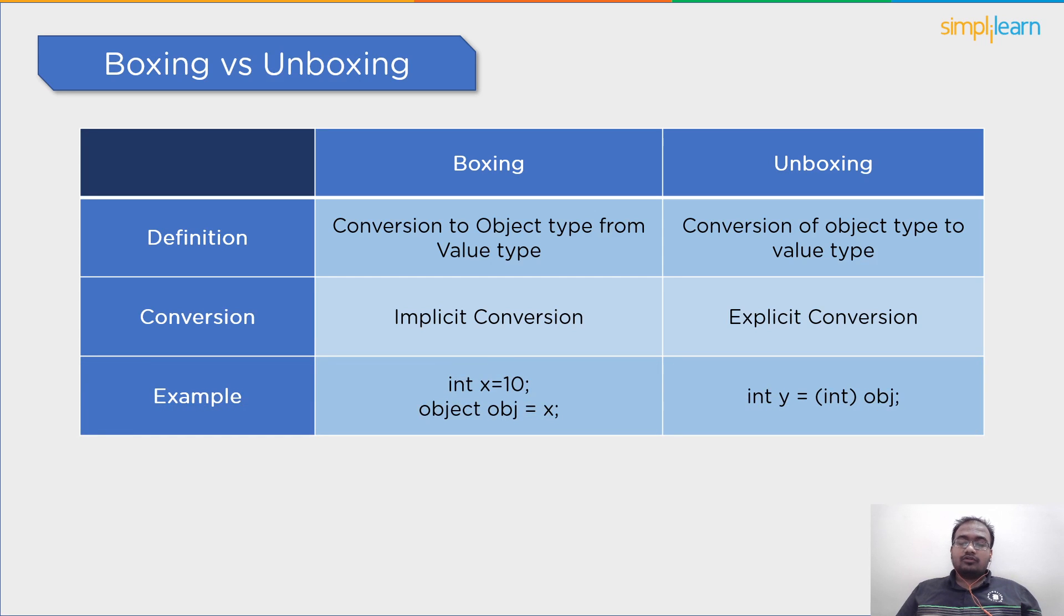Finally, let's go over an example. As you can see in boxing, we first define an integer value and then assign its value to an object variable obj. Now, in case of unboxing, we are defining a new integer variable to store the current object variable. To do that, we are type casting the object variable to an integer type.